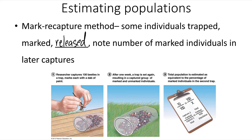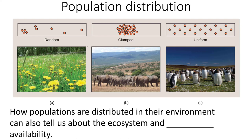When looking at a population within their ecosystem, the individuals may be randomly distributed, clumped together, or uniformly distributed. How populations are distributed tells us about the ecosystem and resource availability. Random distribution usually means offspring are spread through chaotic means such as wind. Clump distribution usually means there are localized resources essential for survival. Uniform distribution is a biological indication that species are interacting with each other — for instance, these penguins are uniformly distributed, each about one pecking distance away from their neighbor during nesting season, as they are territorial.